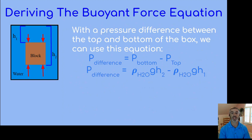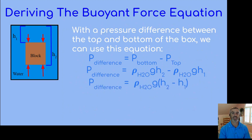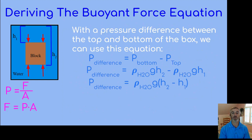For the bottom, it's the density of the water times g times h2, and for the top, we subtract the density of the water times g times h1. We can factor out the density of the water and g. We know that pressure equals force divided by area, but we rearrange to say force equals pressure times area, since we're trying to find a force for the buoyant force equation.